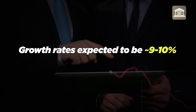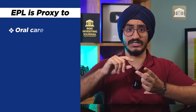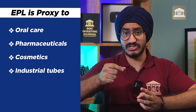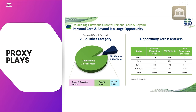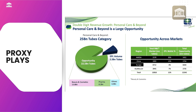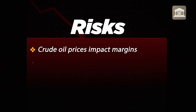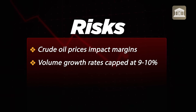Growth rates for EPL will be around 9–10%. There can be margin reversion for 1–2 quarters because crude oil and polymer prices have increased. EPL is a proxy to oral care, pharmaceutical and cosmetics, and industrial tubes. The global market is 22.5 billion tubes and EPL has a volume of 2.5 billion tubes. The biggest risk is margin impact from crude oil prices, and volume growth rates of around 9–10%. Essentially it is a mean reversion play and also a proxy business.